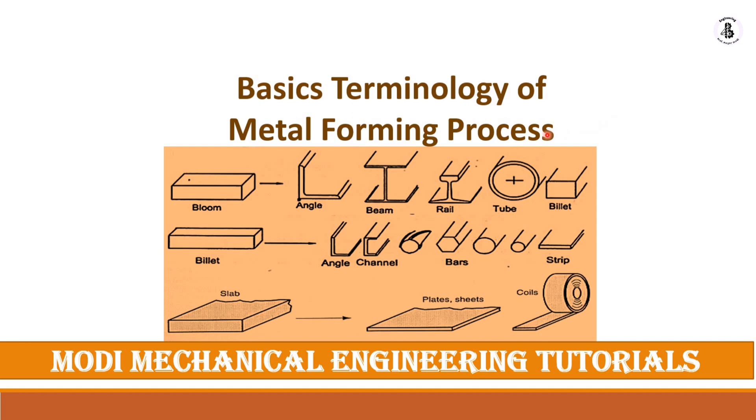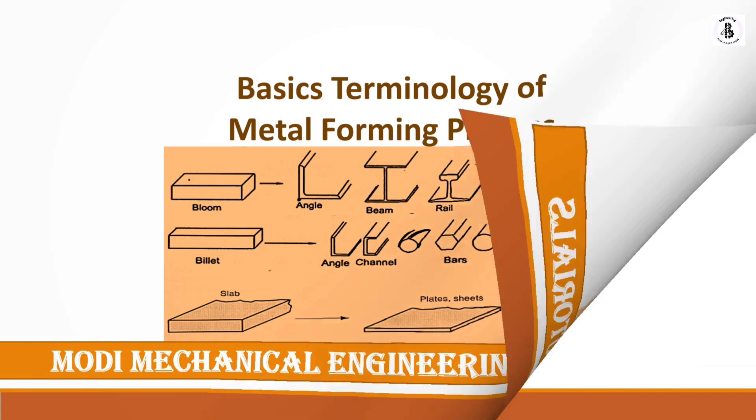The raw materials are in the form of bloom, billet, or slab. These bloom, billet, and slab will be converted into different shapes and sizes depending on the applications. So let us start with the theory of how it works.